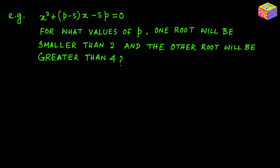Let's take an example. We have the quadratic equation x² + (p − 5)x − 5p = 0, and the question asks: for what values of p will one root be smaller than 2 and the other root greater than 4? Clearly k1 = 2 and k2 = 4, and we need to find the set of values of p for which 2 and 4 both lie between the two roots of this quadratic equation.